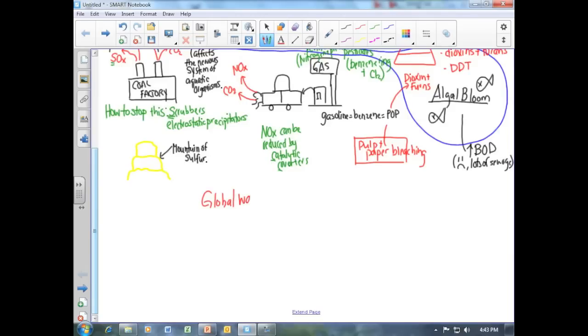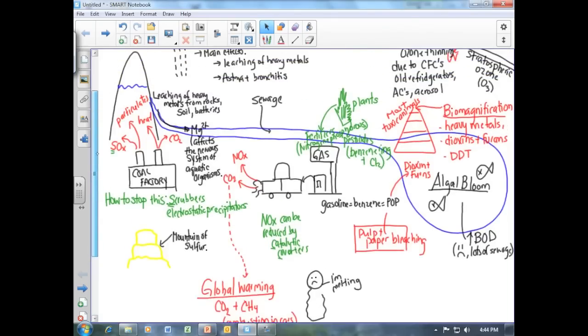Our picture is looking really full, but we will add one more environmental issue which we will look at in the energy unit, and that is global warming. Global warming is due to two gases, and those are carbon dioxide as well as methane gas. While there are other gases that lead to global warming, carbon dioxide from the combustion of fossil fuels is the main contributor.